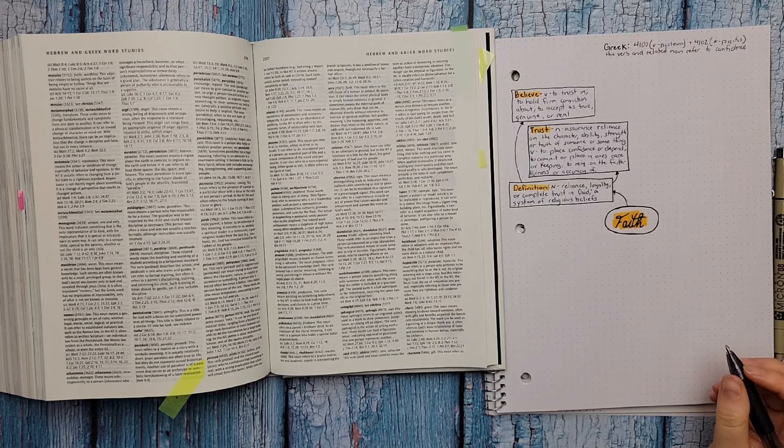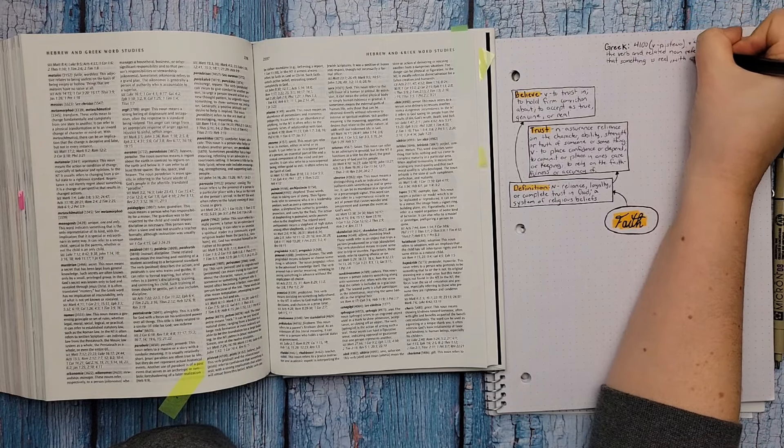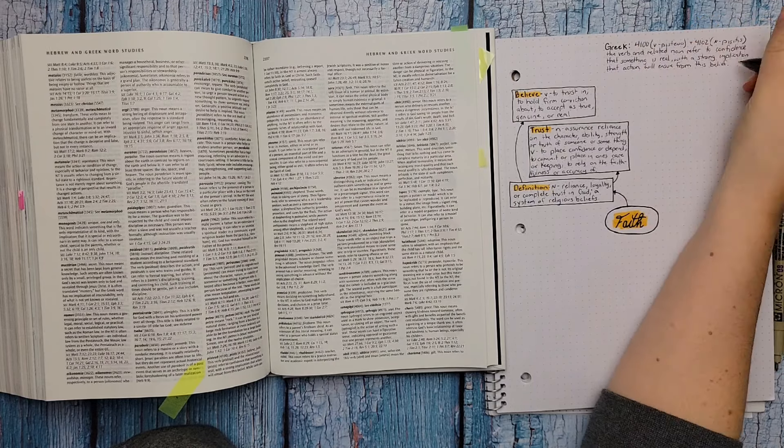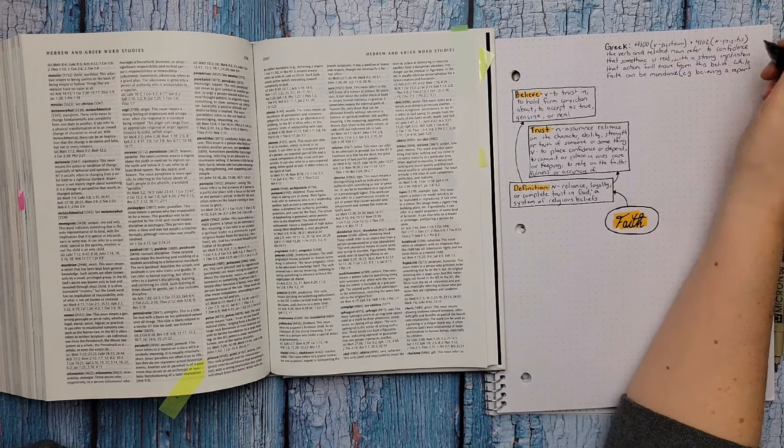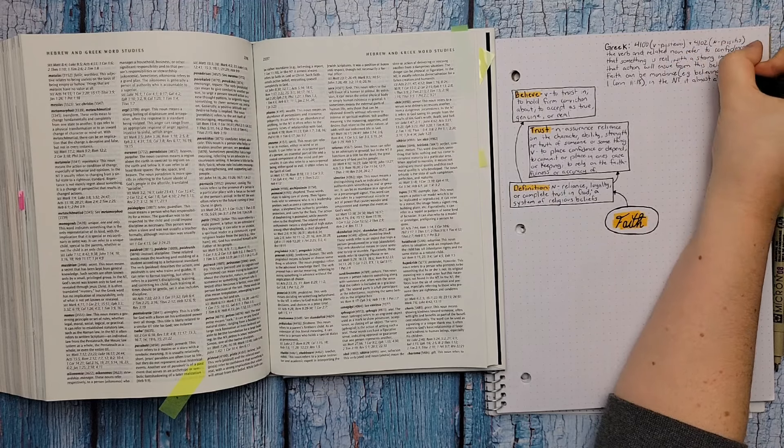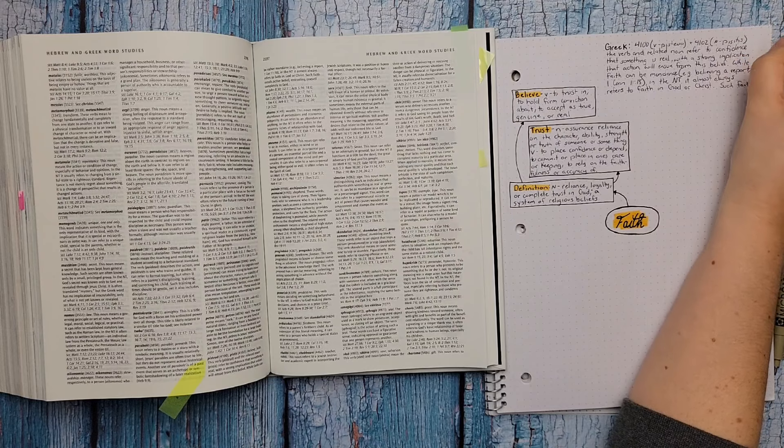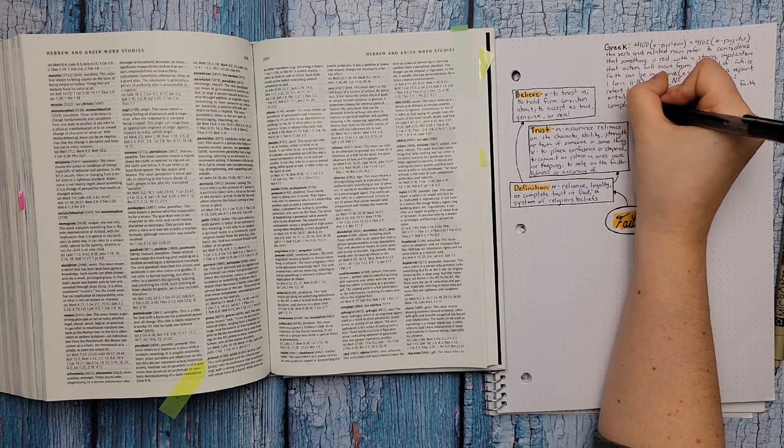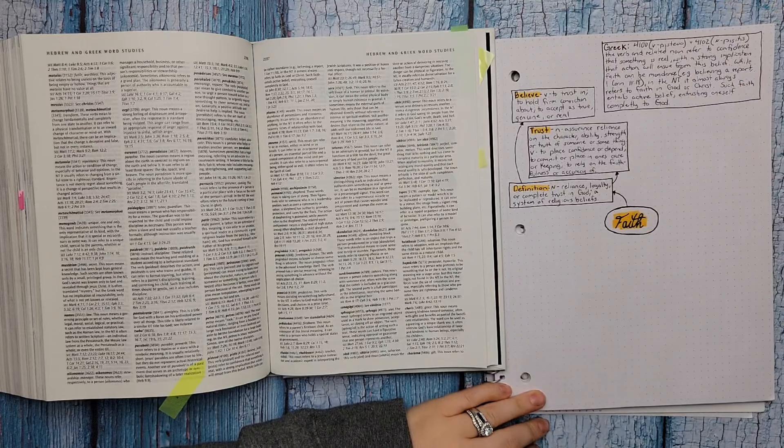So Strong's number 4100 and Strong's number 4102. One's a verb and then there's the noun that is connected to it. The verb and the related noun refer to confidence that something is real with a strong implication that action will ensue from this belief. While faith can be mundane, for example believing a report like in 1 Corinthians 11:18, in the New Testament it almost always refers to faith in God or faith in Christ. Such faith entails active belief and trusting oneself completely to God. So this faith is not just a mere belief in something. It is really completely giving yourself over to God and what you are trusting and believing in. So that's another section and we're going to box it off and add a little bit of color and draw an arrow to that as well.